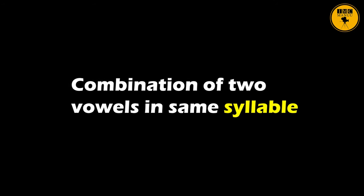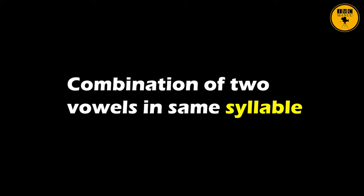Let us now look at the diphthongs in English. There are eight diphthongs in English. These are also known as vowel glides because the position of the tongue shifts from one to the other. In general, all diphthongs are a combination of two vowels in the same syllable. There are three types of diphthongs that close in the front.